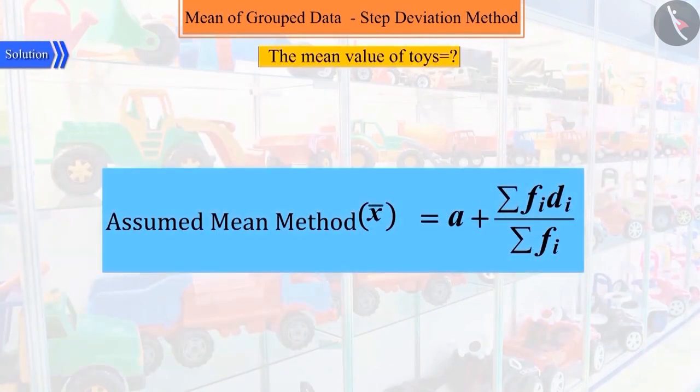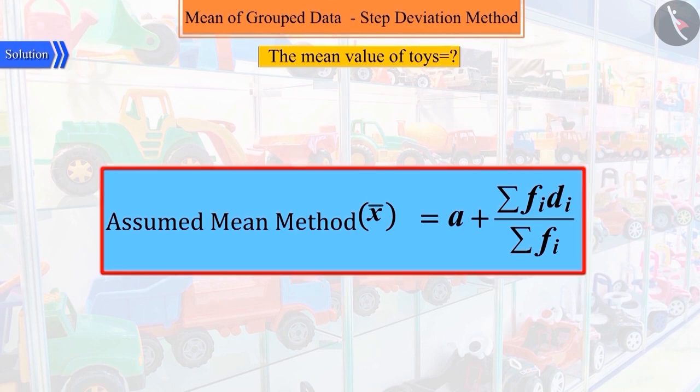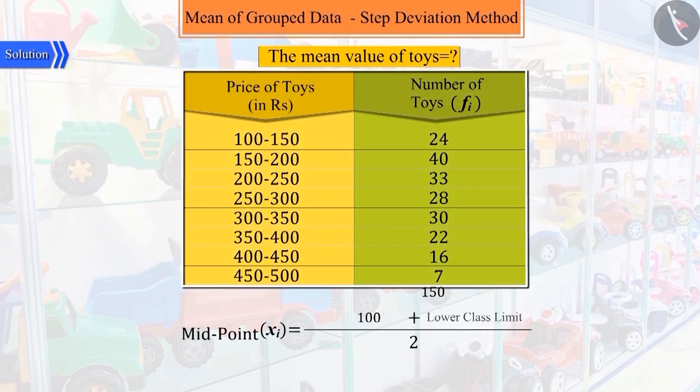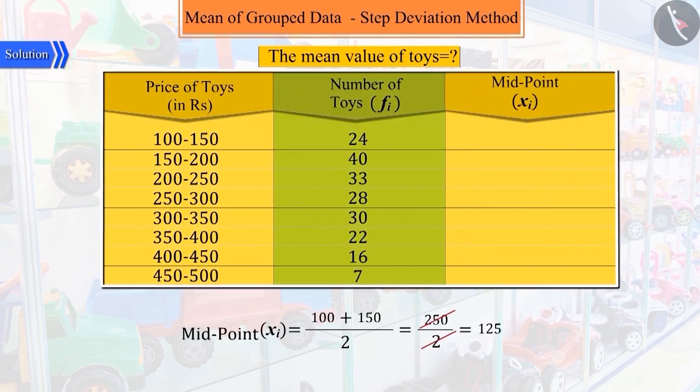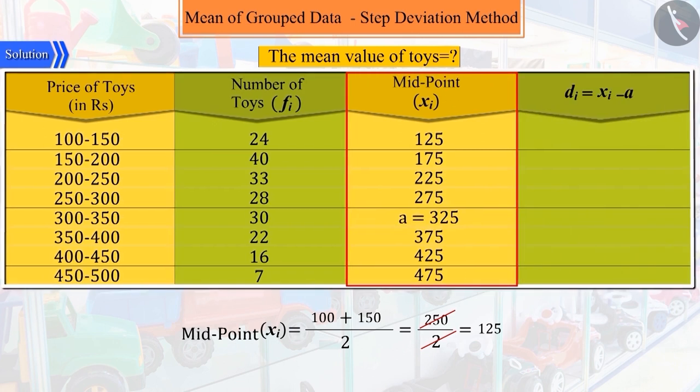In order to find the mean of grouped data, we learned about the assumed mean method in the previous video, where we choose an assumed mean A from the XI and represent the difference between each XI and A by DI.